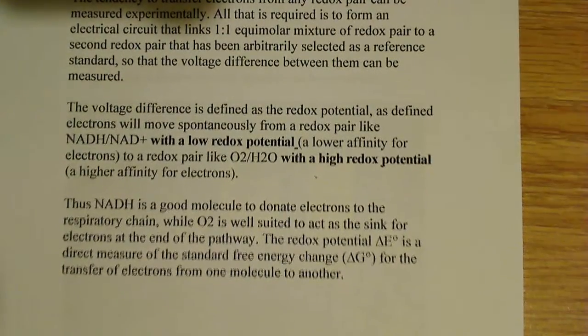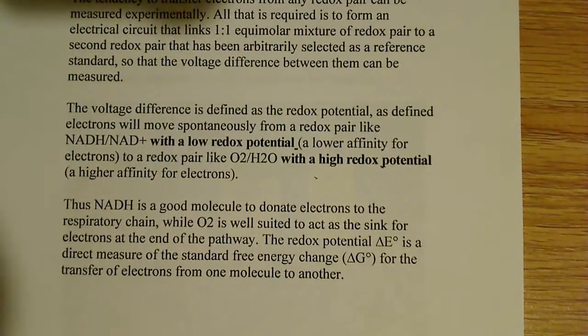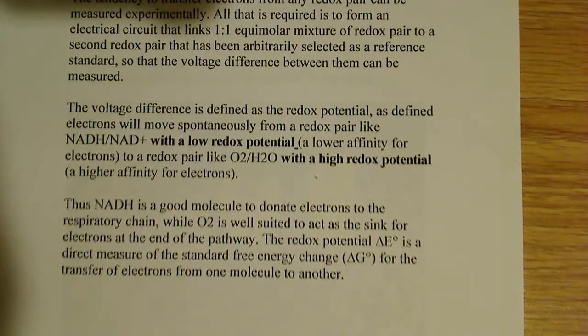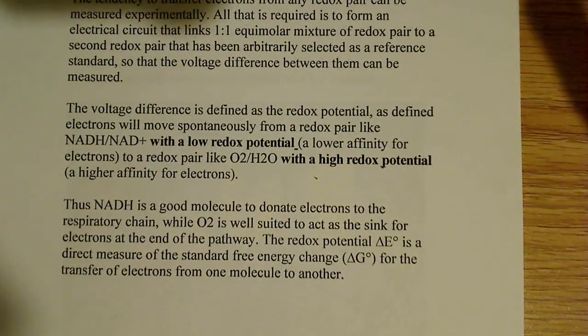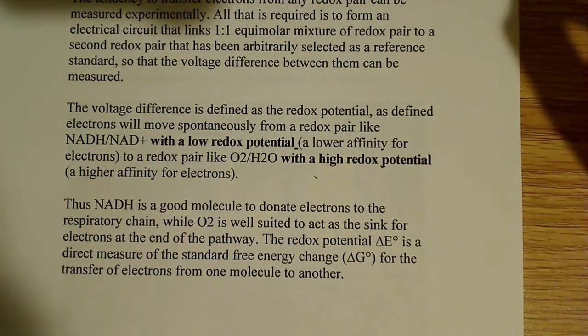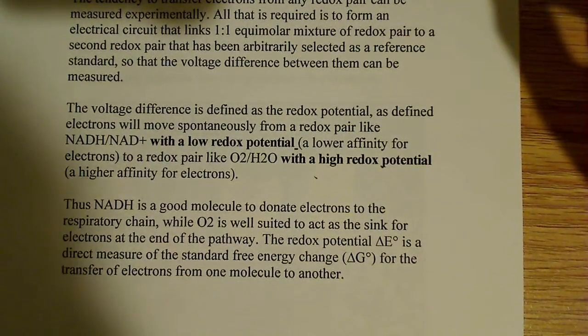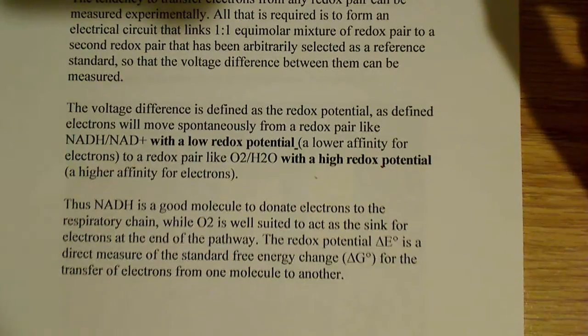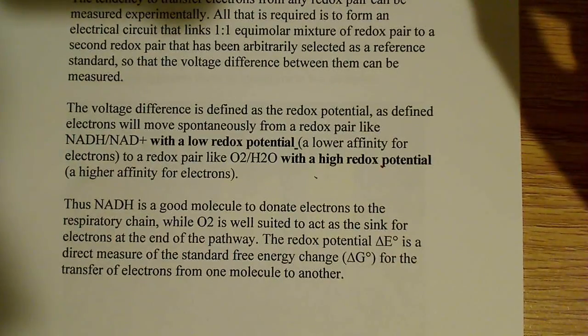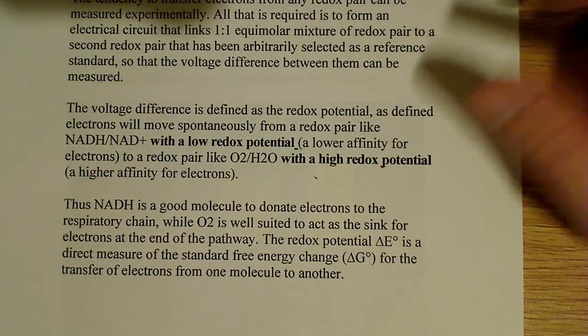At the end of the electron transport chain, oxygen takes up the electrons and becomes water. We then move on to oxidative phosphorylation when we start using the ATPase.